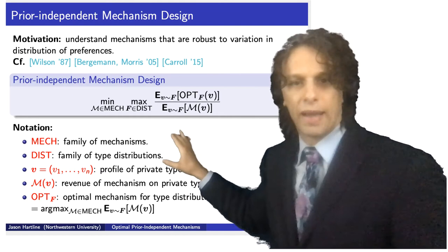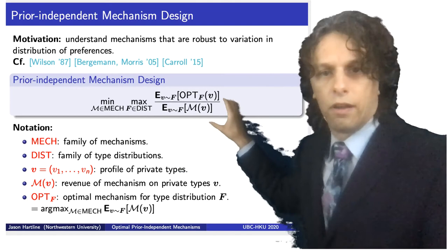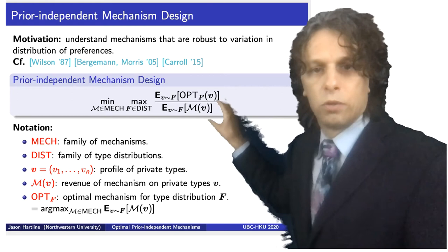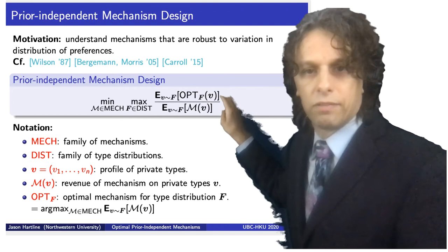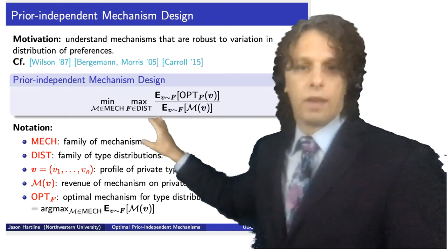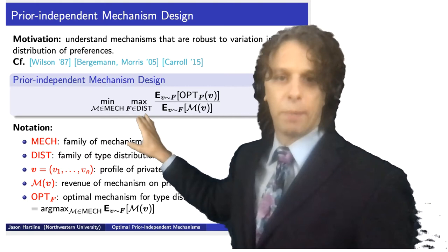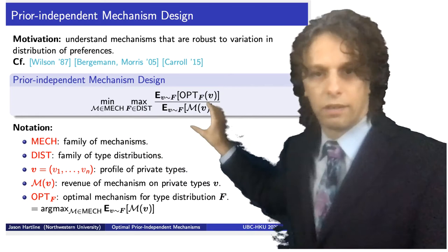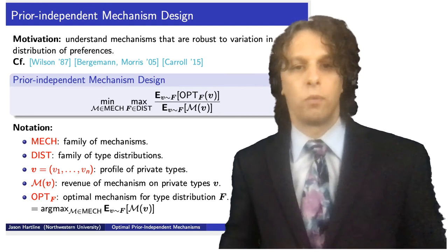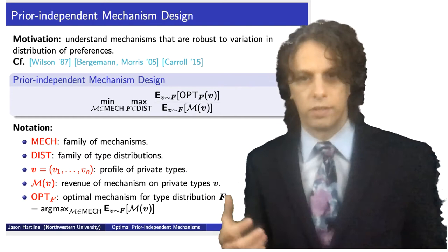What is the prior independent mechanism design formulation? I look at the ratio of the revenue of the optimal mechanism for a given distribution to the revenue of my mechanism. Since it's the optimal mechanism, this ratio is always bigger than one. As the designer, I want to choose a mechanism to minimize this ratio in the worst case over distributions — nature chooses a distribution to make this ratio as large as possible. This is the question: what mechanisms minimize the worst-case multiplicative loss relative to the Bayesian optimal mechanism?